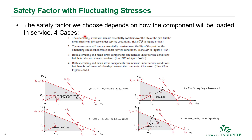When solving fatigue problems, we find the corrected alternating stress and corrected mean stress, giving a point on the Goodman diagram. The Goodman diagram starts at the fatigue strength and has a line to the tensile strength; it can also be intersected by the load line and yield line. Anything below the failure line should survive; anything above will likely fail. There are four different cases for calculating safety factors.